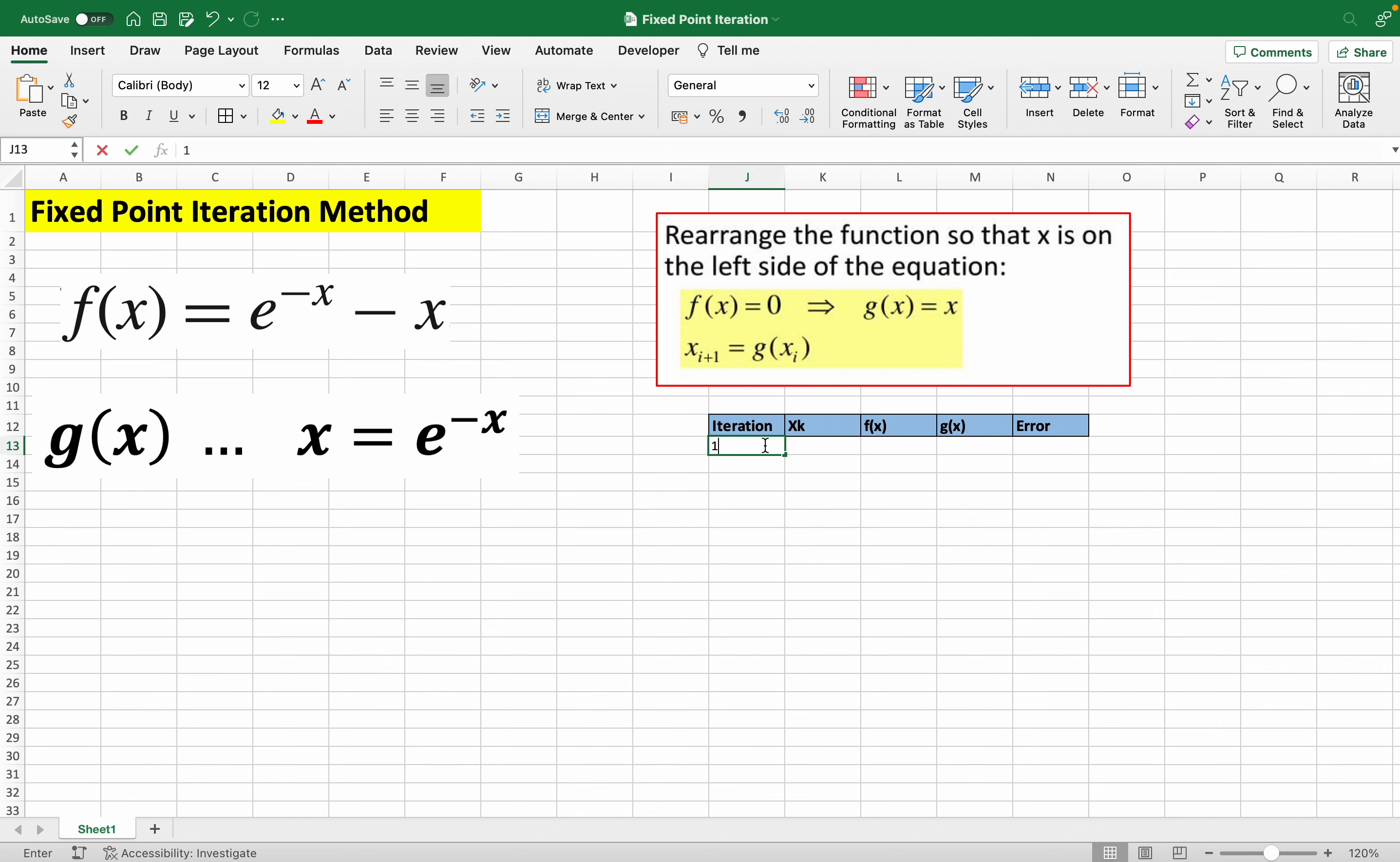This is our first iteration, and xk here represents our first guess, or what we think is the root. This number can be anything, and I'll choose one for this guess. For f(x), we just input this function, e raised to negative x minus x, but replace the x values with our initial guess.